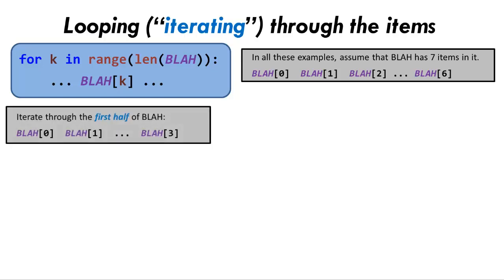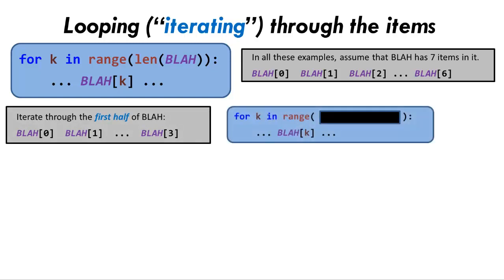For example, suppose that you want to iterate through the first half of a sequence. Here is the basic pattern. What range expression would you use to iterate through only the first half of the sequence? Pause the video briefly to think through your answer. Perhaps you saw that a range expression like range(len(sequence) // 2) will do the trick. I used the double slash operator for division because that does integer division, and a range expression requires an integer. This particular expression does not include the middle element of a sequence with an odd number of elements. Just add one to the expression if you do want the middle element included.